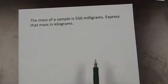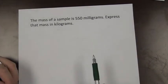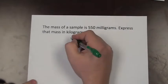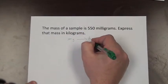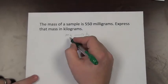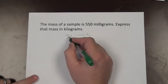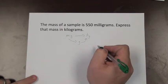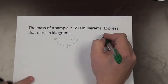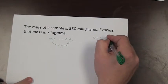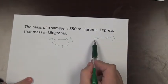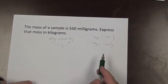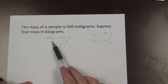Now let's do some unit conversion using dimensional analysis. If the mass of a sample is 550 milligrams, we need to express that mass in kilograms. We'll convert from milligrams to the base unit grams, and then from grams to kilograms. From the prefix definitions, 1 milligram equals 1 times 10 to the negative 3 grams, and 1 kilogram equals 1 times 10 to the 3rd grams.